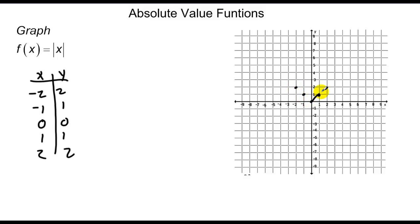You'll notice that the graph looks kind of like a V. It goes linearly in both directions, and we'll call this point — for lack of a better word — a vertex, a point where it kind of bounces.